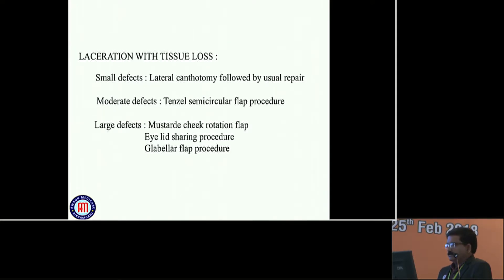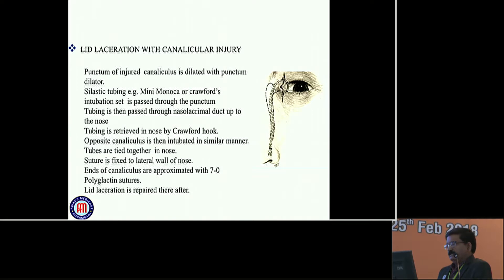For laceration with tissue loss: small defects - lateral canthotomy followed by usual repair. Moderate defects - Tenzel semicircular flap procedure. Large defects - Mustarde cheek rotation flap, eyelid sharing procedure, or glabellar flap procedures. For eyelid laceration with canalicular injury, we generally use mini-Monoka or Crawford intubation thread passed through the punctum. The tubing is then passed through the nasolacrimal duct up to the nose and fixed to the lateral wall.